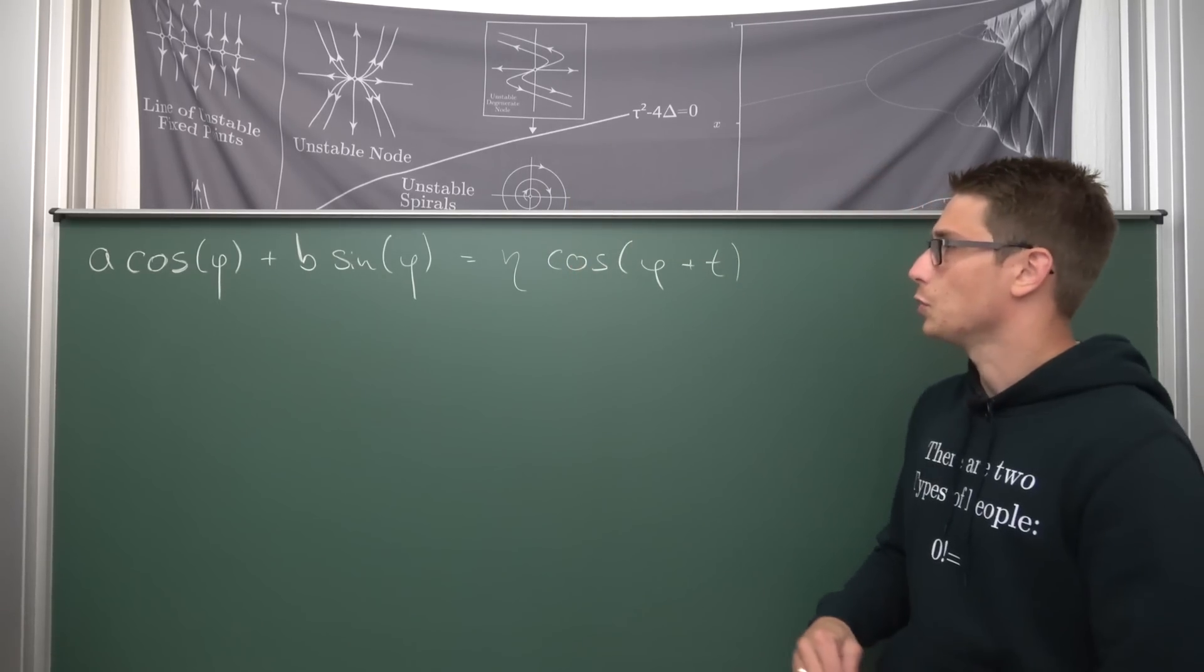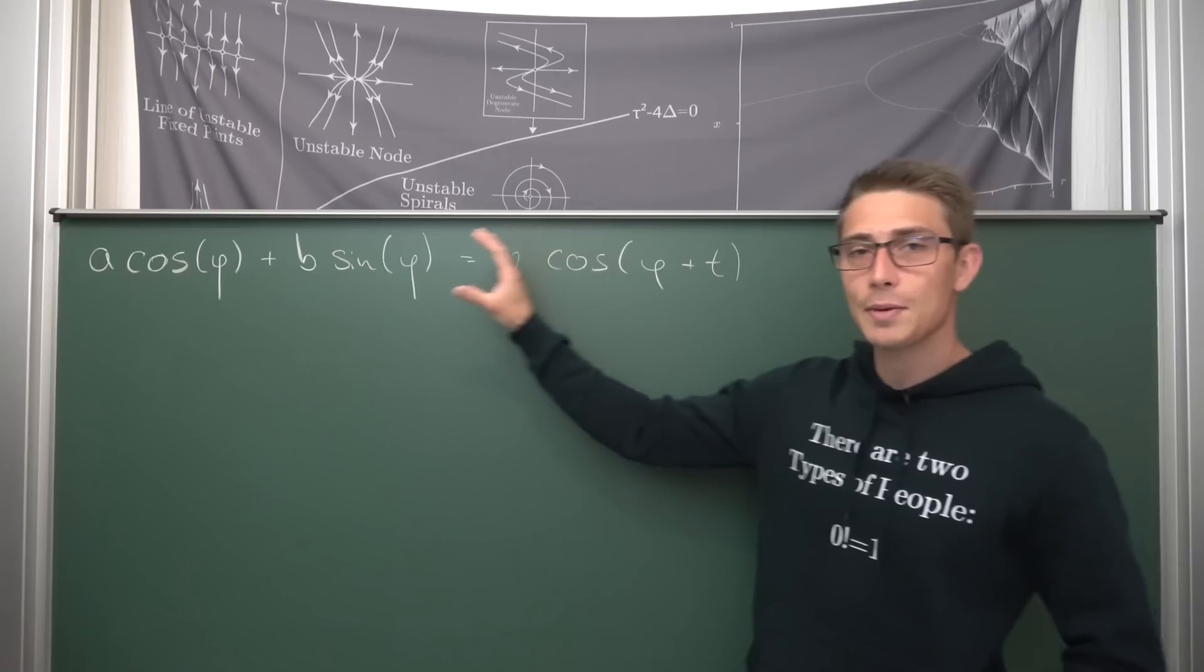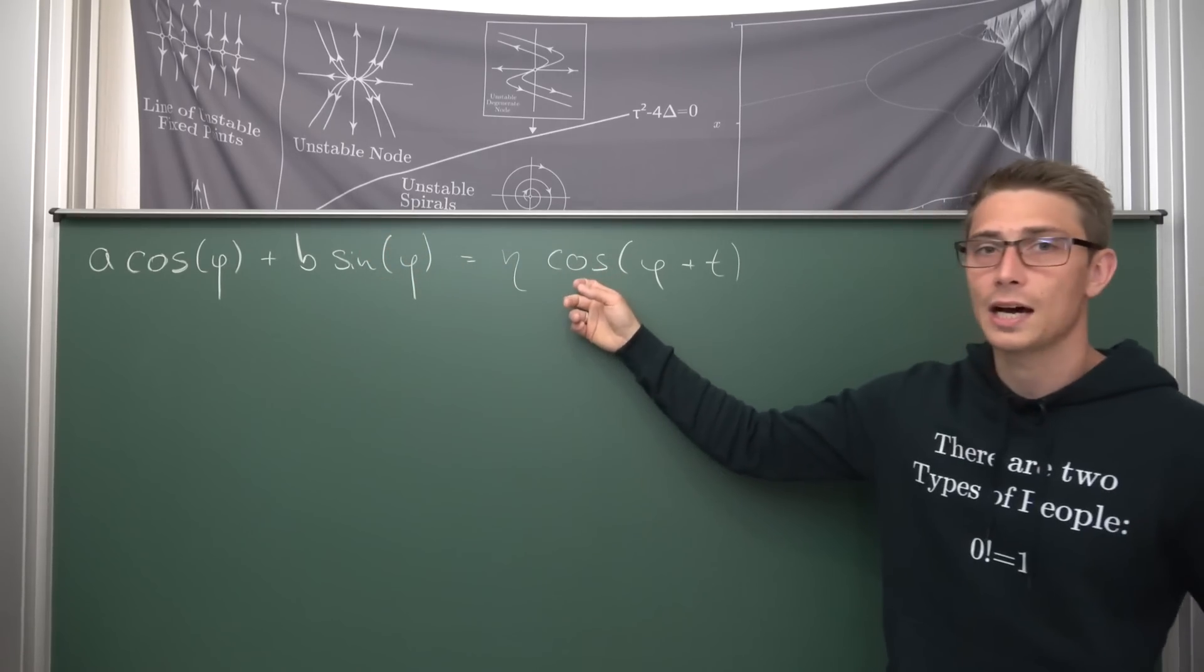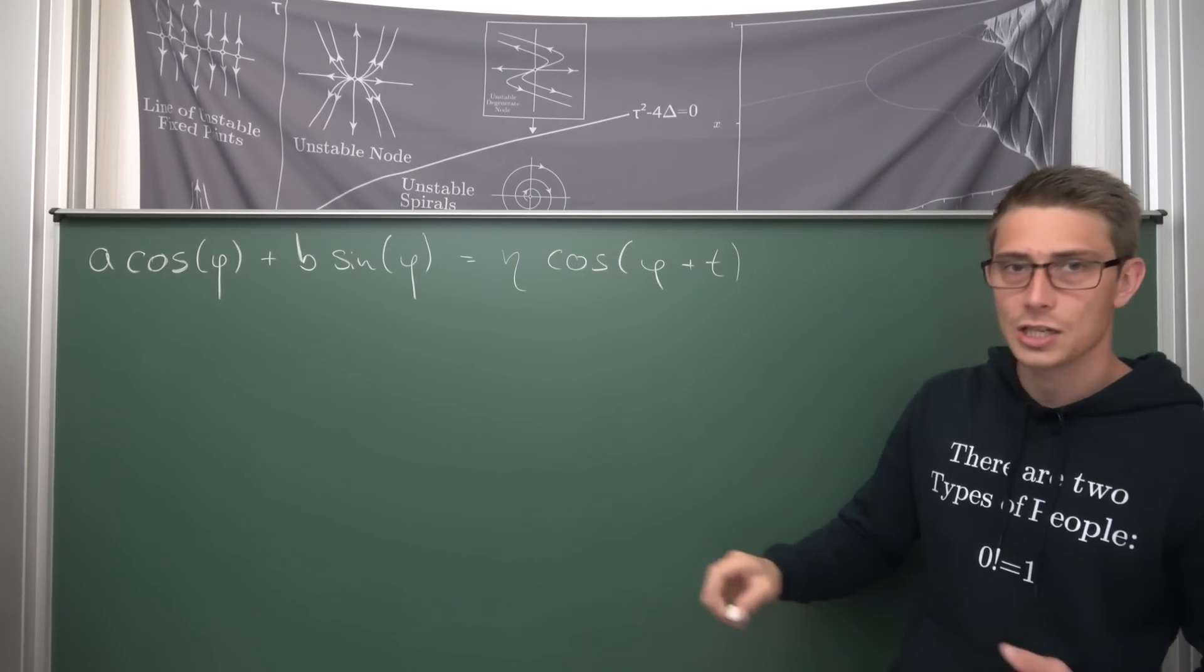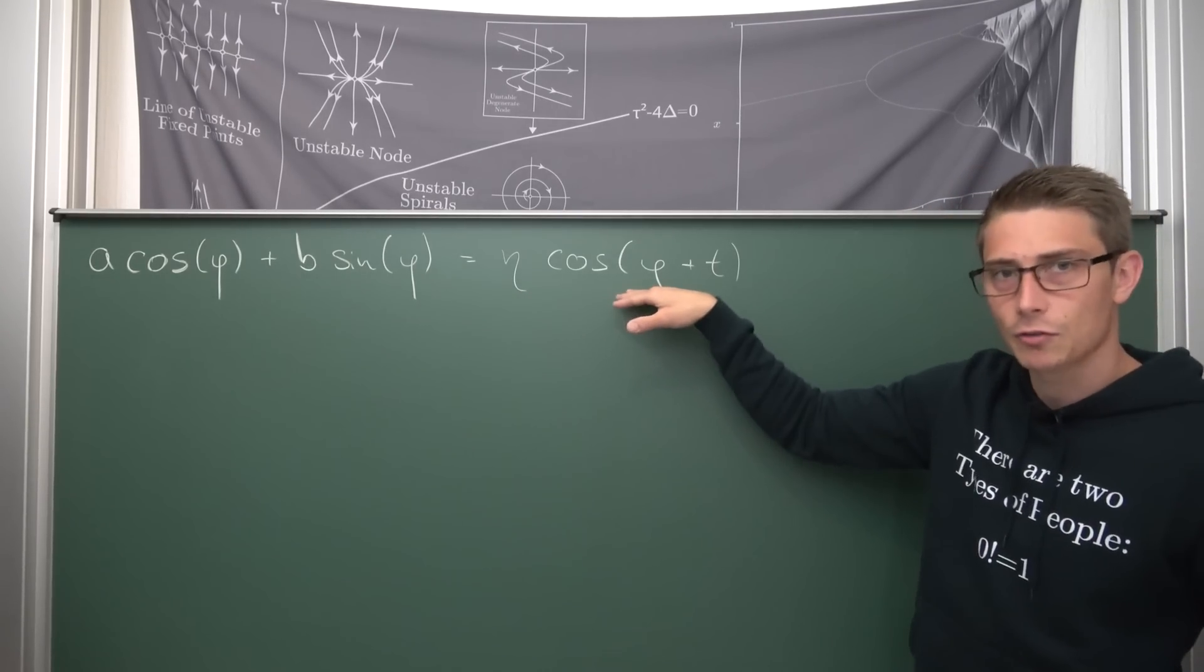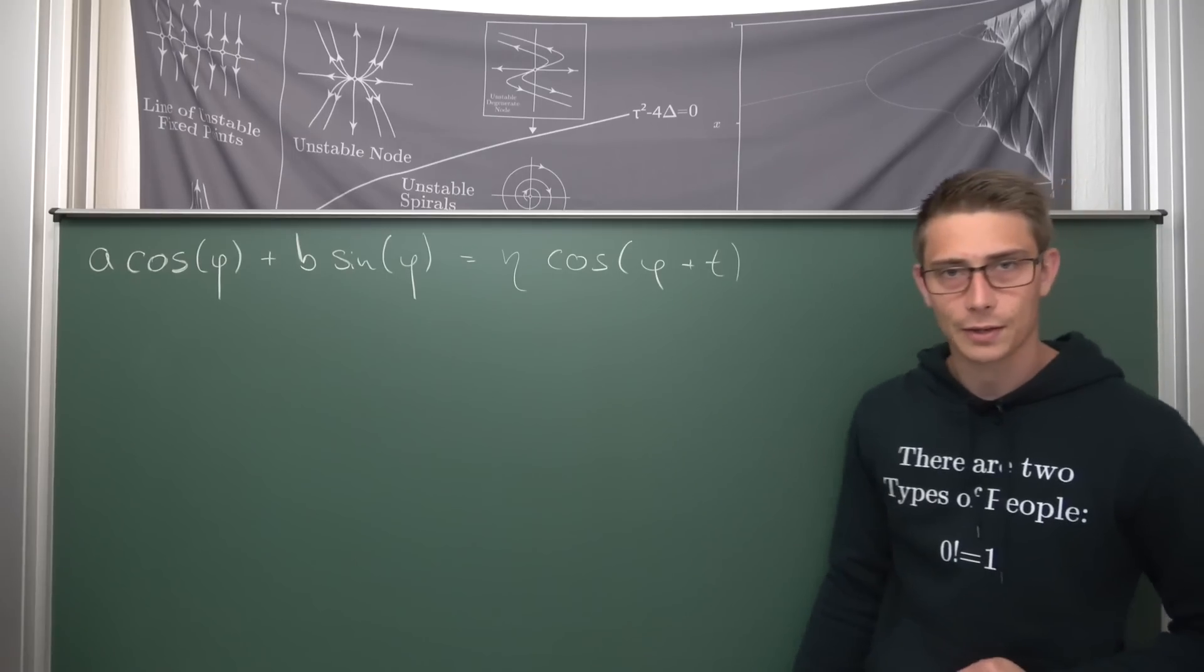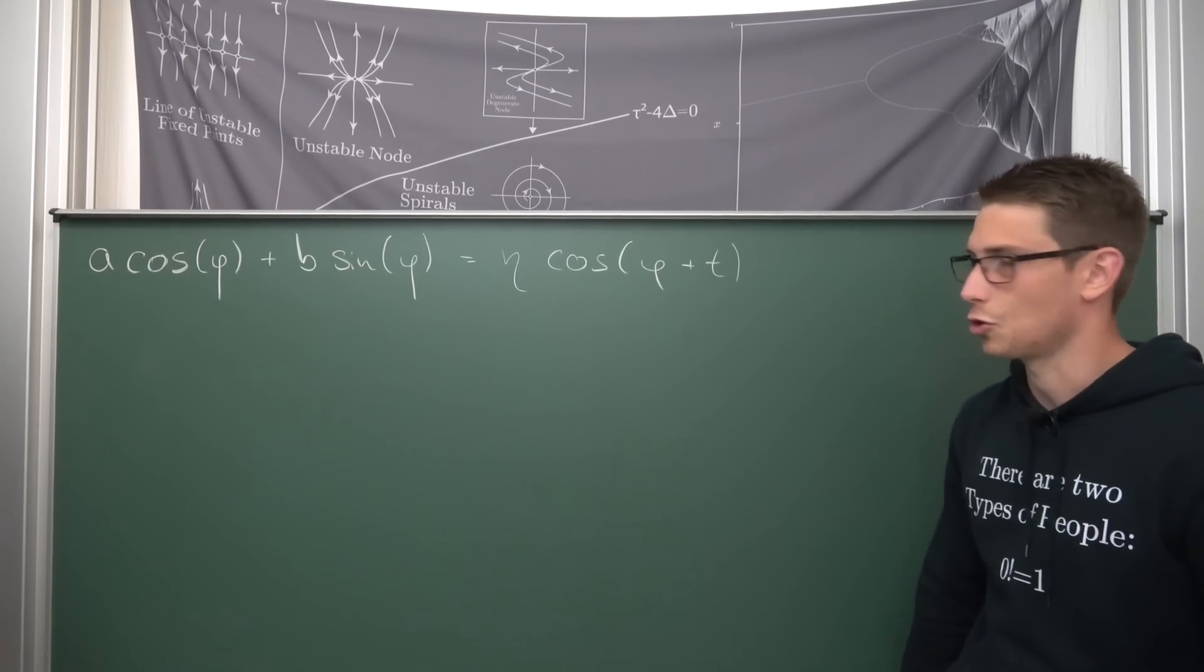And I leave it as an exercise to the reader, or the viewer I should rather say, to derive the same identity that we do for the cosine for the sine. You can actually also express this summation of sines and cosines as something of this form, just with a sine in the front instead of a cosine. And now we are going to dive right in, and I hope you are going to enjoy the video.